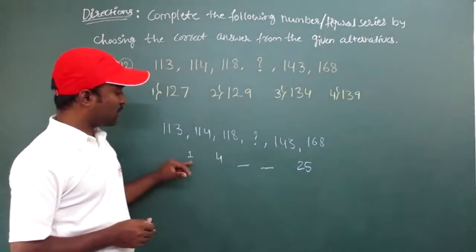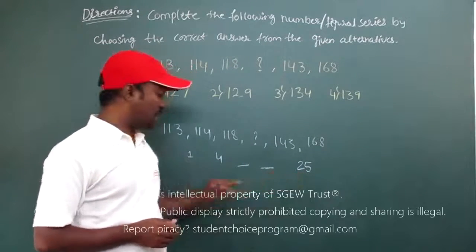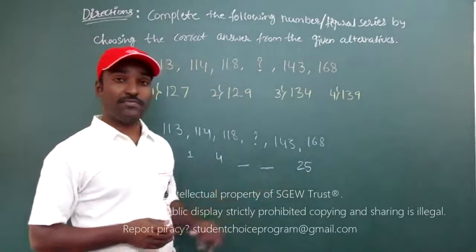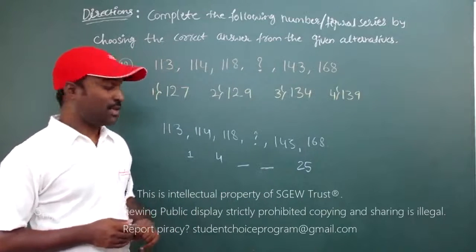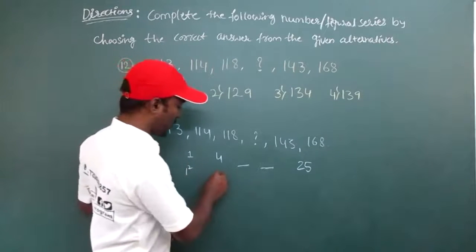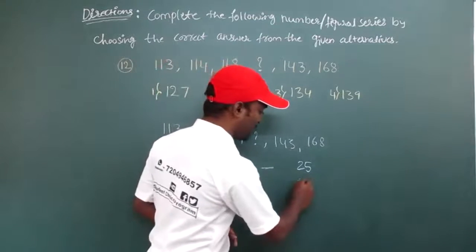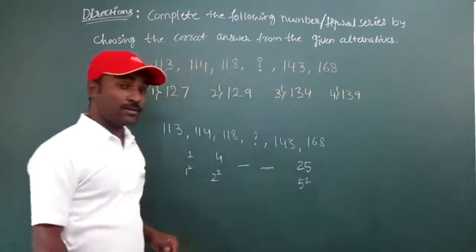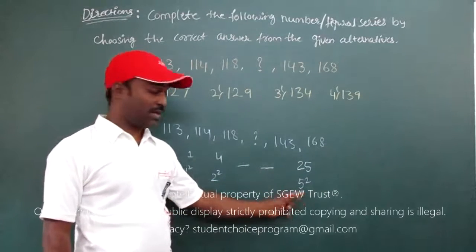Now we got the difference as 25 here. Now if you observe these numbers 1, 4, 25. How they are appearing? Yes, they are squares. 1 square is 1, 2 square is 4, this is 5 square. So here is a series 1 square, 2 square, 5 square.